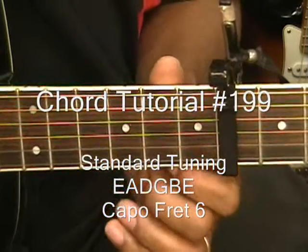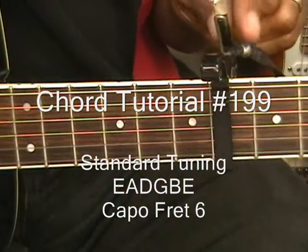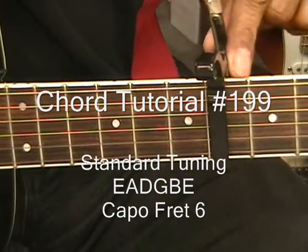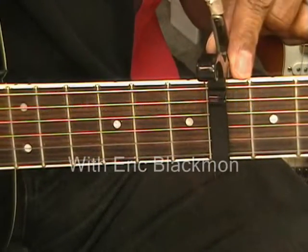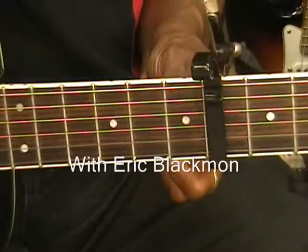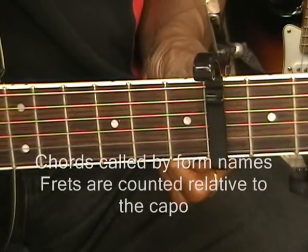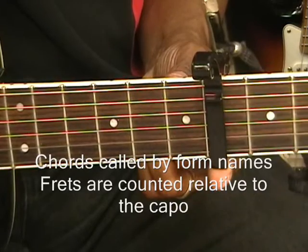The guitar is tuned standard, EADGBE, and we have a capo at fret number 6. We'll be calling chords by their form names, and we'll be calling frets relative to the capo.